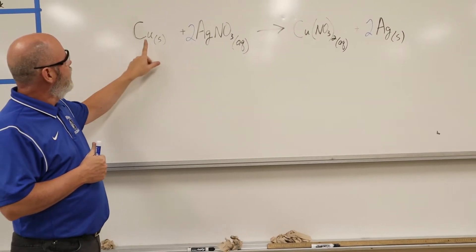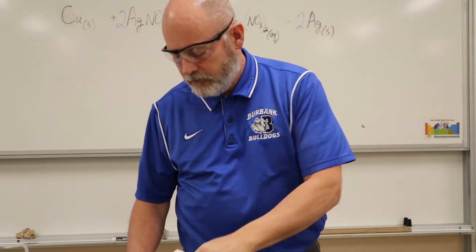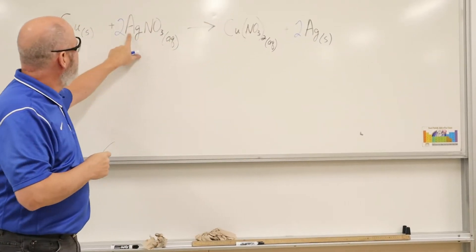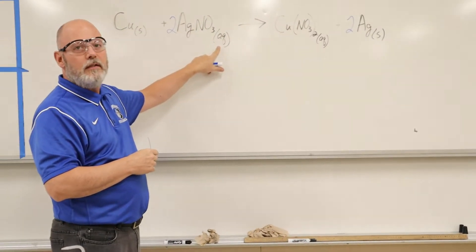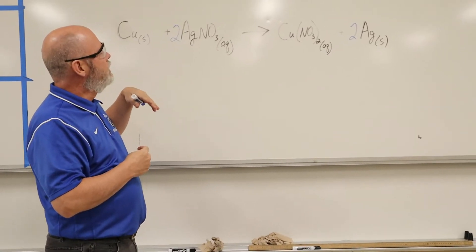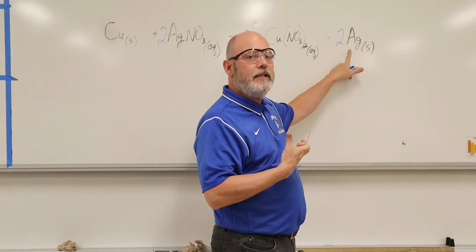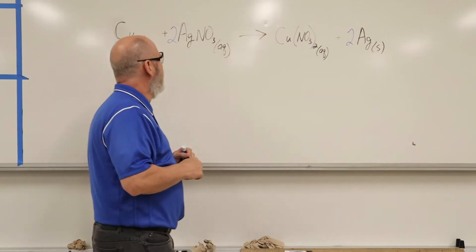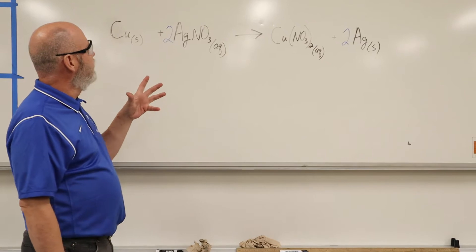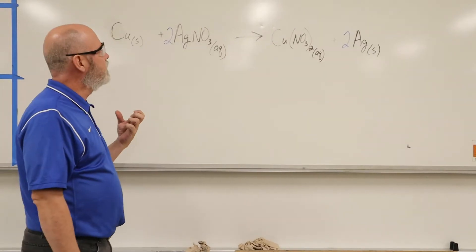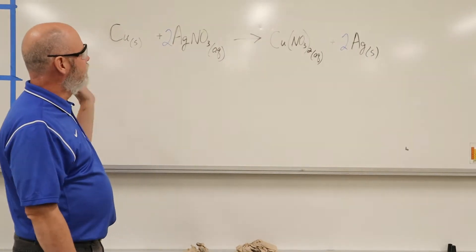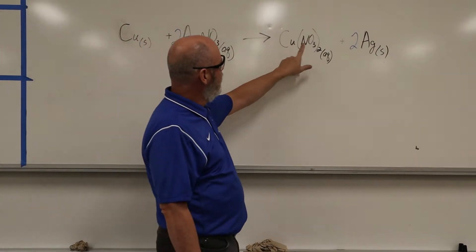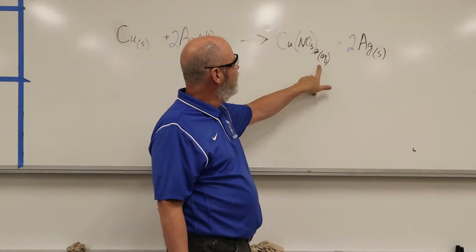We're going to do another single replacement reaction, but this time we're going to take solid copper and put silver nitrate solution with it. You're going to see gray flakes, and that's the solid silver. If you've had a little bit of oxidation-reduction we'll talk about that, but the copper is going to replace the silver and make copper nitrate — we don't really care about that, it's going to stay dissolved.